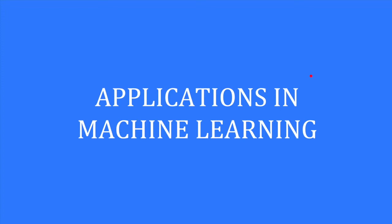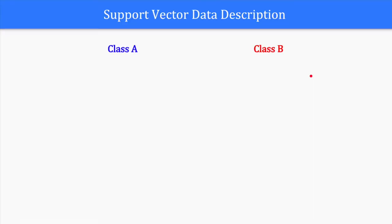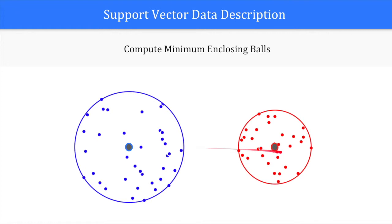Minimum enclosing balls give us an accurate description of each class in a dataset, which we can use to classify new data points. In this case, we are presented a linearly separable 2D dataset with two classes, A and B. We first compute the minimum enclosing ball for each class. Then, the centers of the enclosing balls induce a Voronoi diagram that we use for classification.